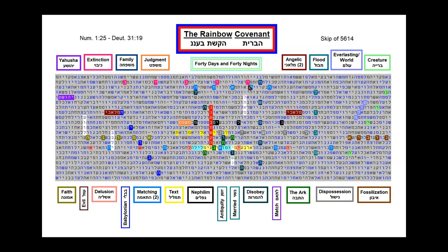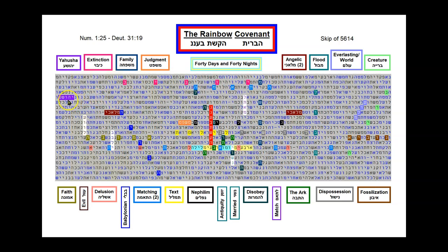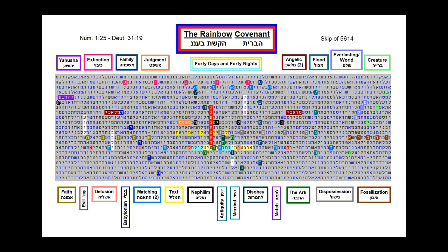Yahusha tells us in Luke chapter 17 verses 26 and 27, 'And as it was in the days of Noah, so it will also be in the days of the Son of Man. They ate, they drank, they married wives, they were given in marriage, until the day that Noah entered the ark, and the flood came, and destroyed them all.' And Yahusha — Jesus — is here in the purple lettering. The apostle Paul tells us in 2 Thessalonians that in the last days there will be a strong delusion and a great apostasy, a falling away from the faith. Delusion is in this peach color going to the right.